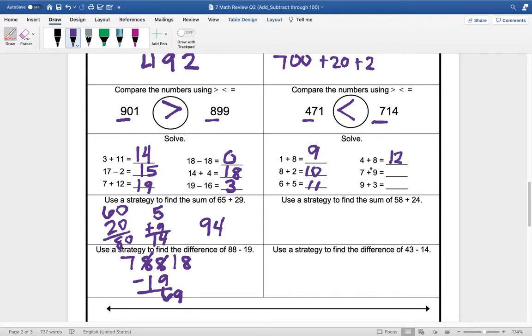Solving these: 1 plus 8 is 9, 8 plus 2 is 10, 6 plus 5 is 11, 4 plus 8 is 12, 7 plus 9 is 16, and 9 plus 3 is 12.